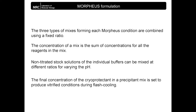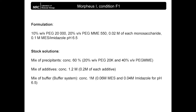Some aspects of Morpheus formulation are worth mentioning again. The three types of mixes forming each Morpheus condition are combined using a fixed ratio. The concentration of a mix is the sum of concentrations for all the reagents in the mix. Non-titrated stock solutions of the individual buffers can be mixed at different ratios for varying the pH. The final concentration of the cryoprotectant in the precipitant mix is set to produce vitrified conditions after flash cooling. The condition F1 from Morpheus 1 is used as an example.